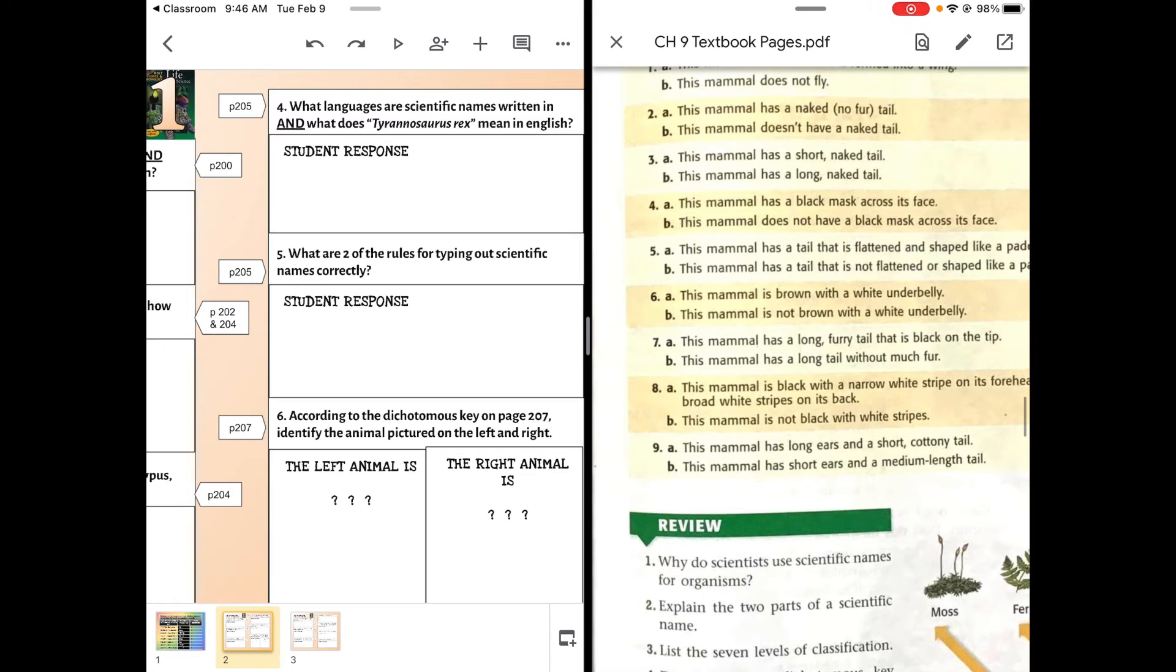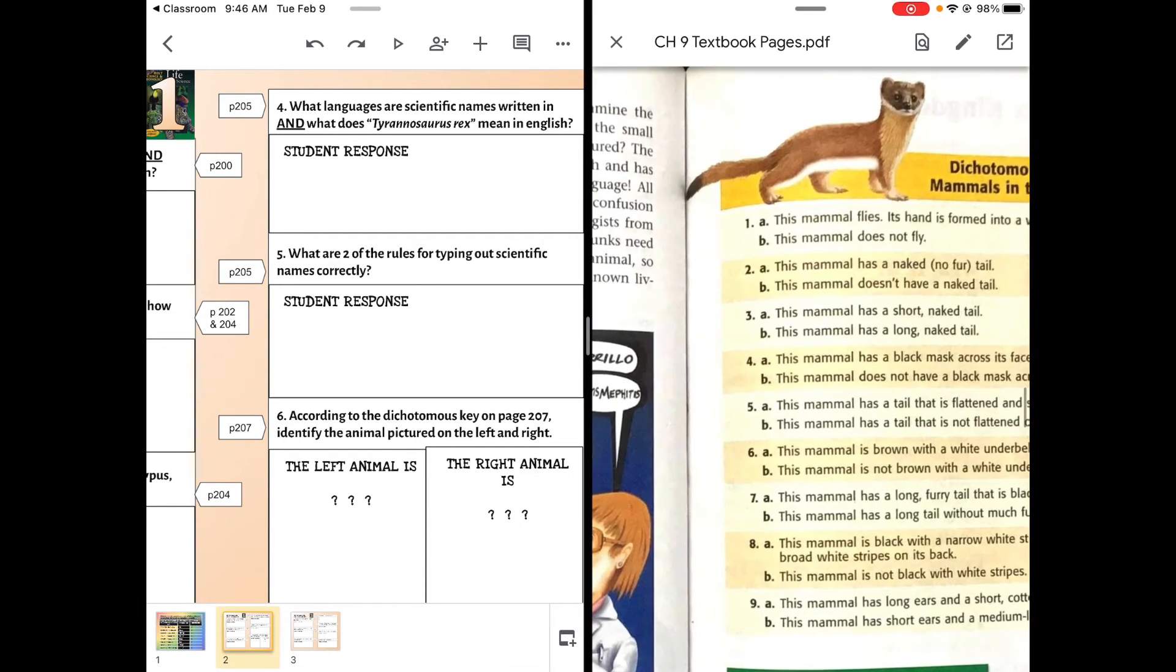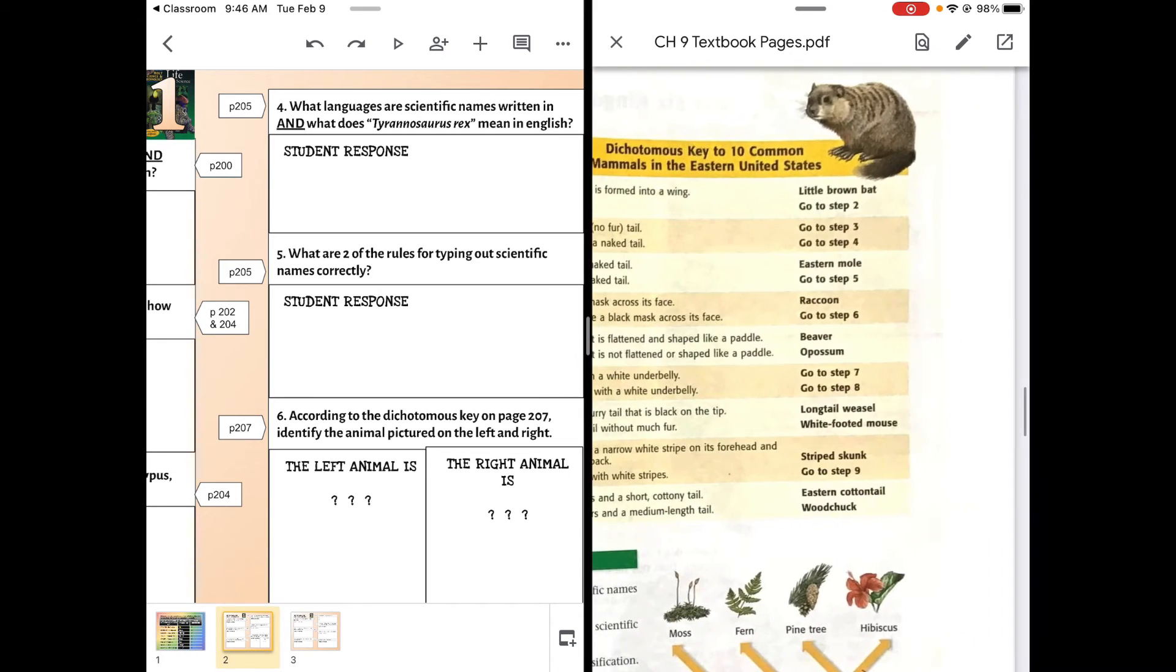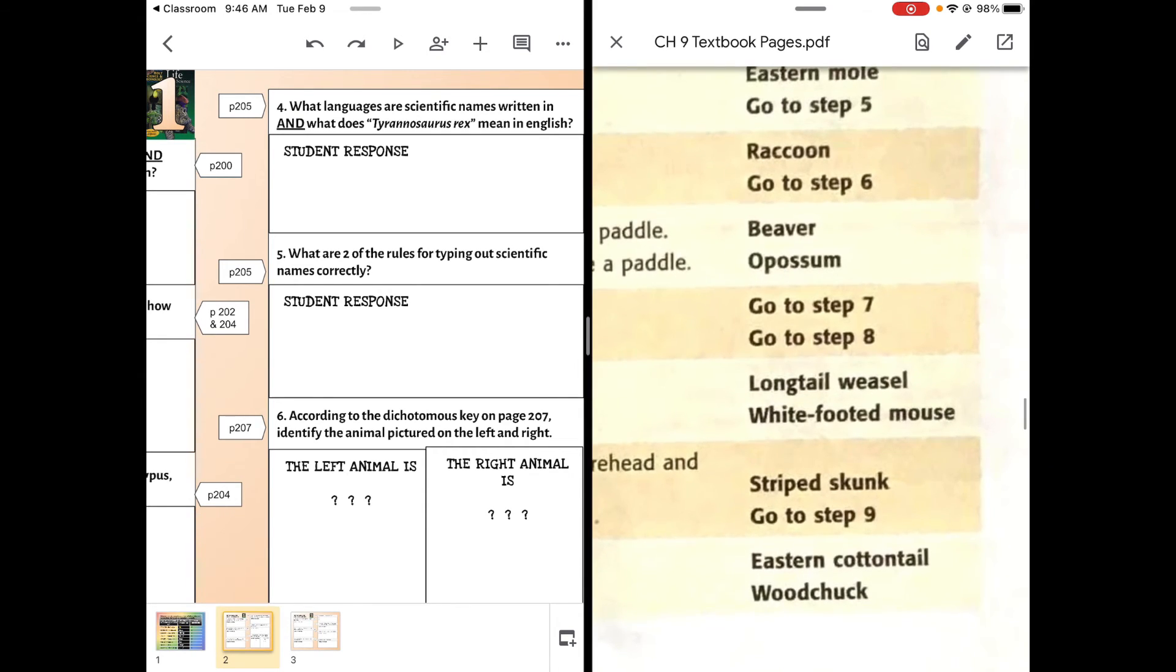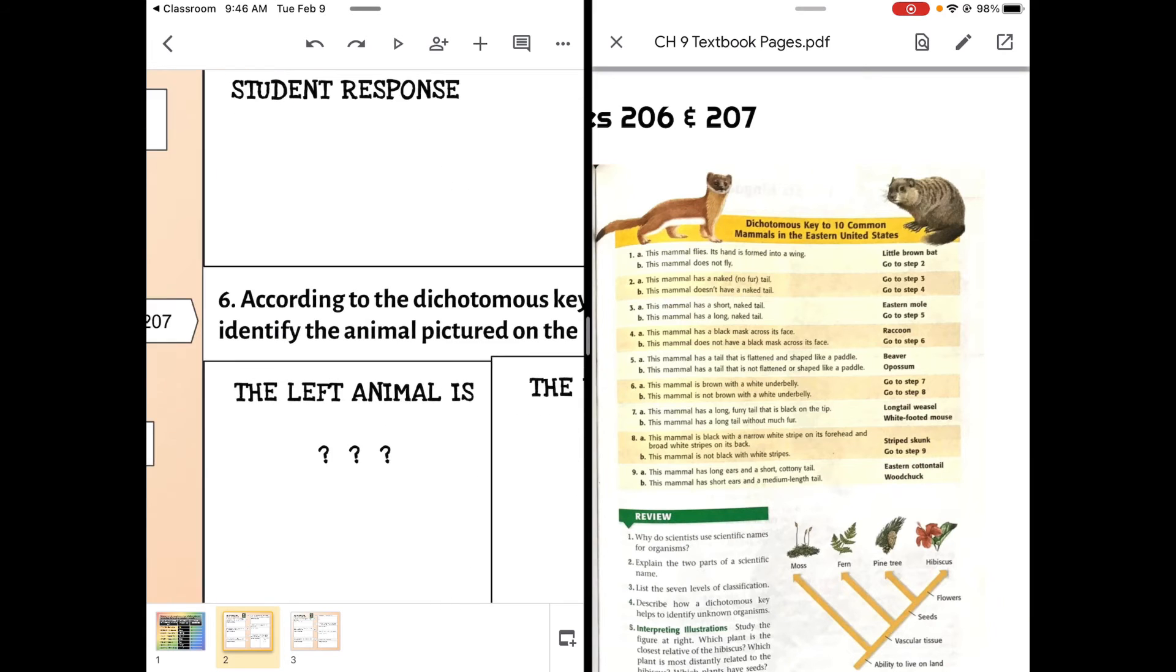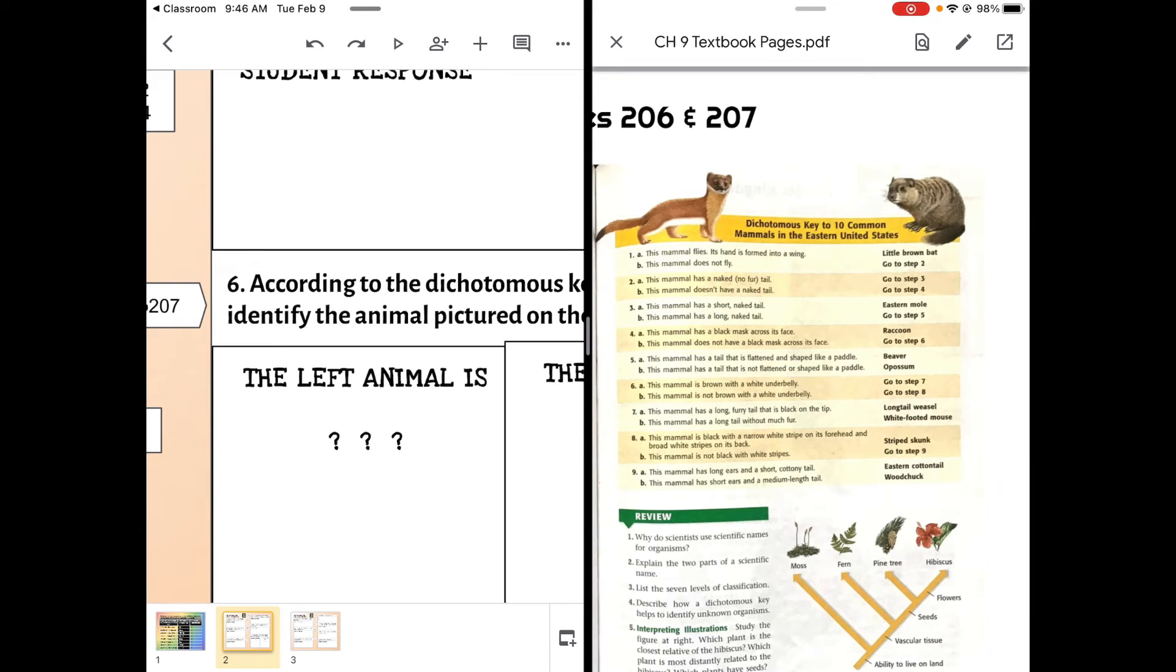This mammal has a long furry tail that is black on the tip. That's true. So this mammal is the long tail weasel. So the creature on the left is the long tail weasel.